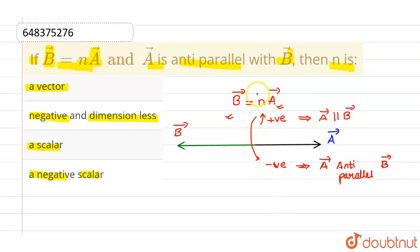So obviously, this quantity must be negative. And this n cannot be a vector. So this option is incorrect. And again, this is also incorrect. Now, we have to select: is this negative and dimensionless or a negative scalar?